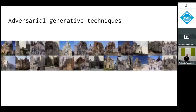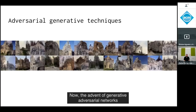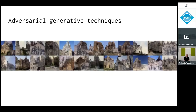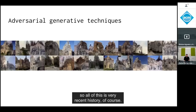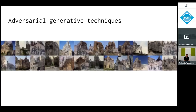The advent of generative adversarial networks is a pretty important watershed moment, happening around 2014. All of this is very recent history. What GANs do is pit two networks against each other.